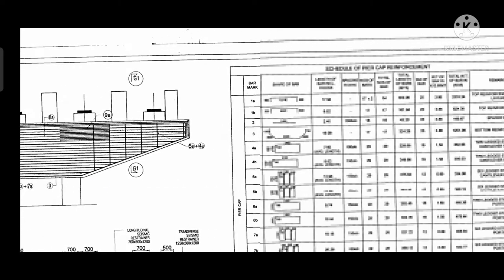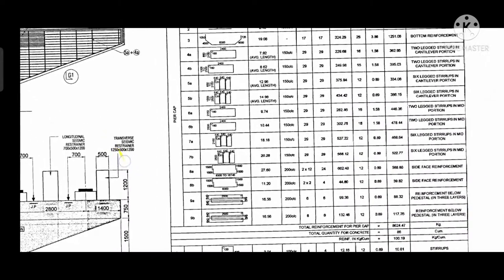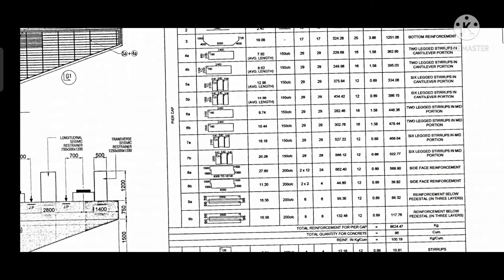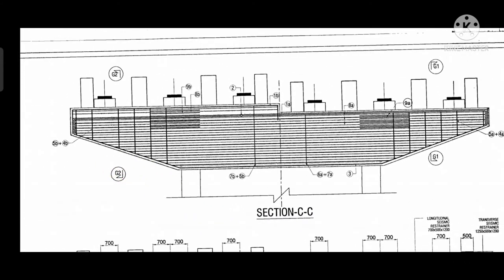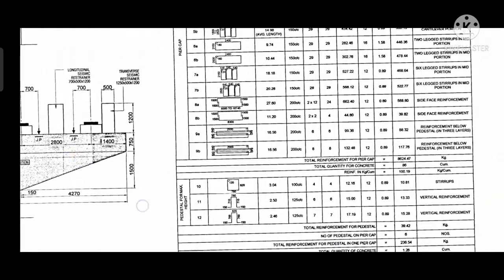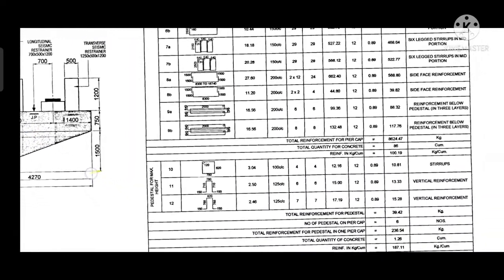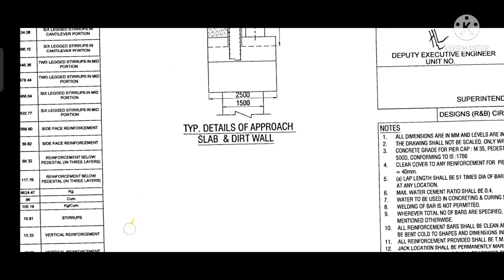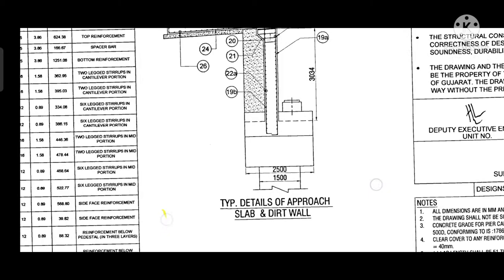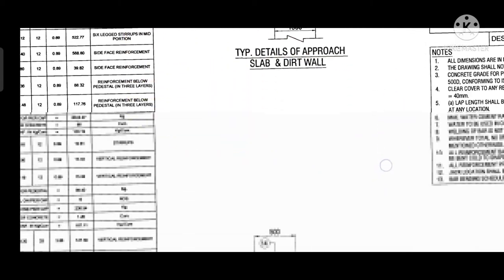If we do not understand the reinforcement position, we can see the GG, G1, and G2 sections, and there we can easily understand everything about the position of the bar, which is given below the drawing.